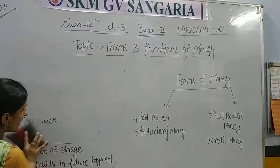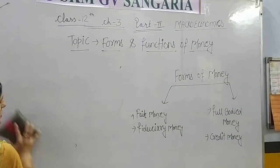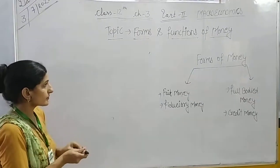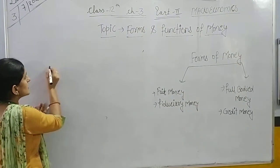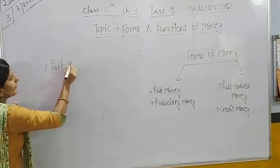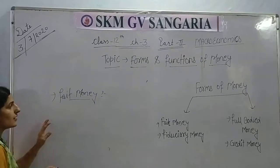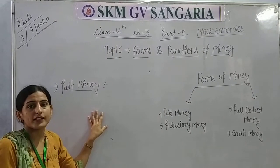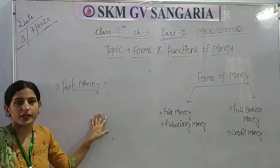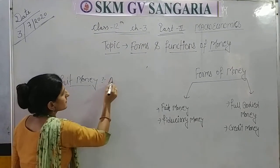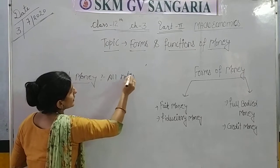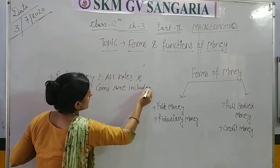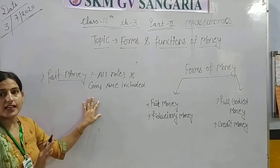Now we will study the forms of money. The first is fiat money. Fiat money is the money which is issued by the order and authority of the government — we can say the authority and government of the country. All notes — that is, paper notes that we use — and coins are included in this. All types of notes and coins are included in fiat money.